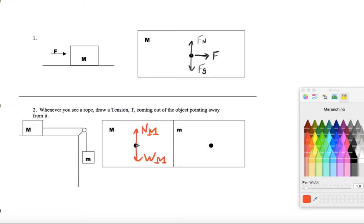And then we have this tension force. The rule for tension is tension always goes away from the object, so I have the tension force like that.